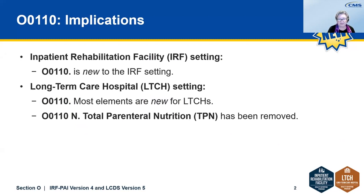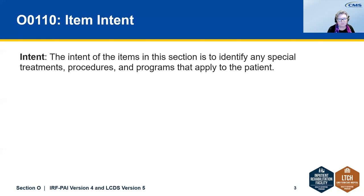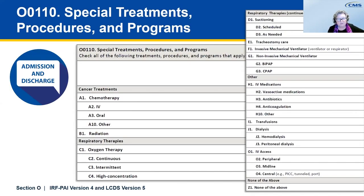I'll start by explaining the implications for each setting for item O-0-1-10. For the IRF setting, this is a completely new item, and this is a bit different for LTCH, because LTCH already had some data elements for O-0-1-10. However, most of these data elements are also completely new for the LTCH setting. One element that was in the LCDS was O-0-1-10-N, Total Parenteral Nutrition, and this has now been removed. The intent of these items is to identify any special treatments, procedures, and programs that apply to the patient on admission and then again on discharge. This is a screenshot of the items with all of the procedures and treatments listed that would be checked on both admission and discharge.